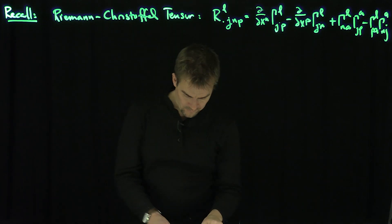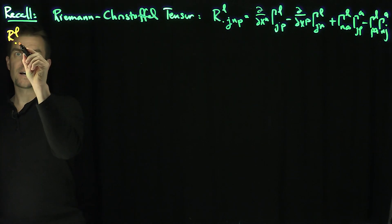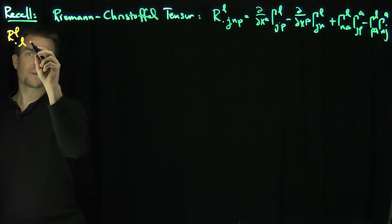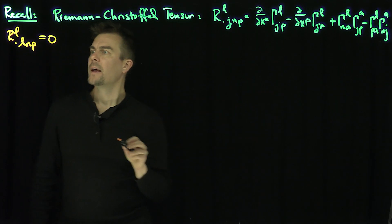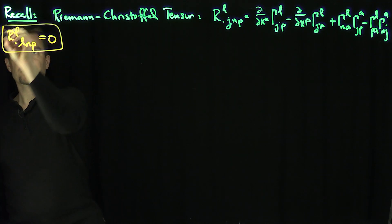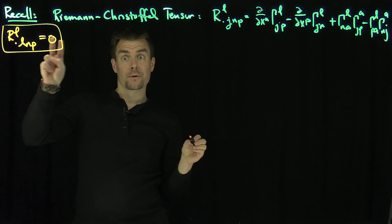We know from a previous video one of the Bianchi identities states that if I look at R^L_LNP, if I trace over this L and then do an NP, we know that this quantity is equal to zero. That's one of the Bianchi identities. Now what we want to do is consider tracing it over those other two variables.